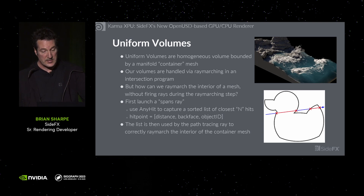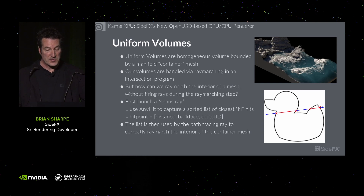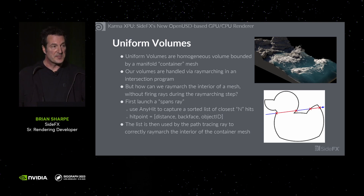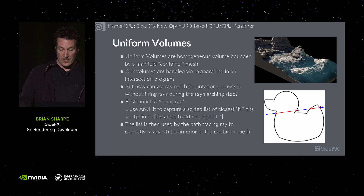Up next is uniform volumes. Uniform volumes are homogeneous volumes bounded by a manifold container mesh, and are often used for oceans and water. As shown in our previous architecture talk, our volumes are handled by ray marching in an intersection program. But how can we ray-march the interior of the mesh without firing rays during the ray-marching step, because OptiX doesn't allow for that? What we do is first cast a single spans ray through all the container meshes. It uses an AnyHit program to capture a sorted list of the closest N hits. A hit point is stored as its distance, whether it's a front face or back face, and its object ID — and because we don't need to execute a shader to collect that information, it's fast. The list is then used by the path-tracing ray to correctly ray-march the interior of the container mesh.